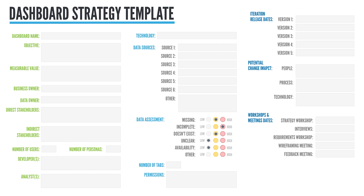We're going to look at a few other things that may not be readily apparent: how many tabs do we think we're going to have on the dashboard — we probably don't know that out of the gate — what permissions are going to be needed, who needs access, and when do they need access. Moving over to the right, we see release and versioning dates that we need to put in, as well as the potential change impact across people, process, and technology. This is a first opportunity to acknowledge that if this dashboard is truly going to deliver value, how is it going to impact people, process, and technology? And finally, if you're going to be using workshops and meetings, when are you going to have those — putting some timing around those.